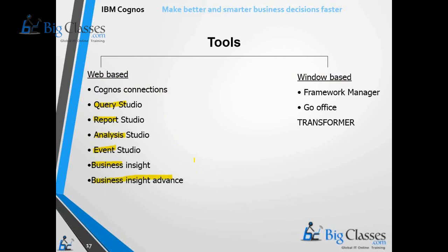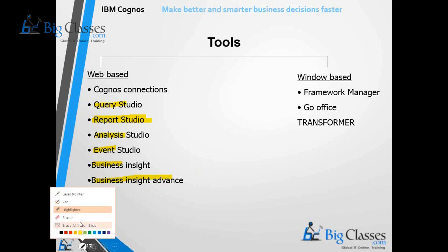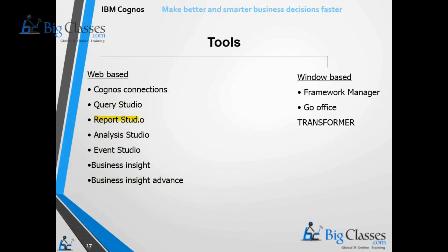Query Studio, Report Studio, Analysis Studio, Event Studio, Business Insight, and Business Insight Advance are all reporting tools. You may ask why there are so many. Report Studio is the professional report authoring tool — as a developer, 95% of the time we are going to work with Report Studio only. It has all features provided by IBM. Query Studio and Analysis Studio are just like subsets of Report Studio.